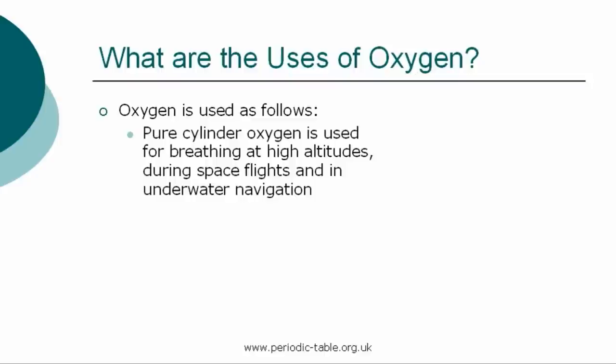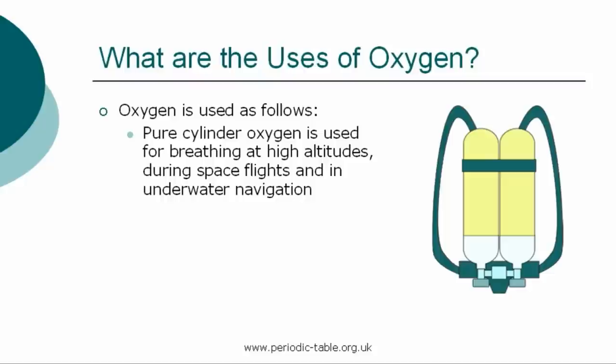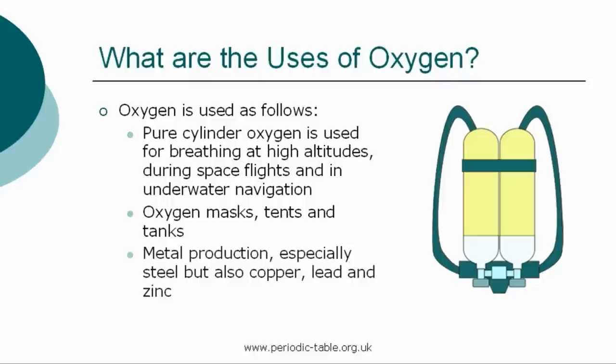Once the properties of an element have been established, we then have the ability to identify how it can be used. Pure cylinder oxygen is used for breathing at high altitudes, during space flights, and in underwater navigation. People who have trouble breathing use oxygen masks and tanks to help them get the oxygen they need. Oxygen also plays an important role in metal production, especially steel but also copper, lead, and zinc.